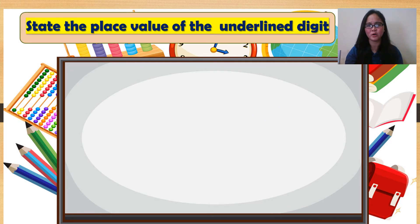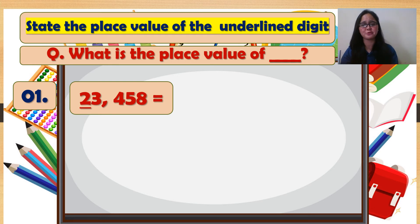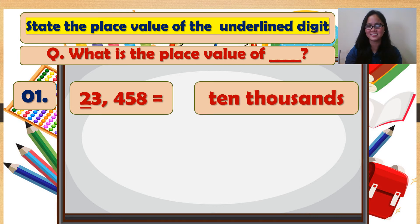State the place value of the underlined digit. What is the place value of blank? Let's check. Number 1: 23,458. 2 is... it's tens.